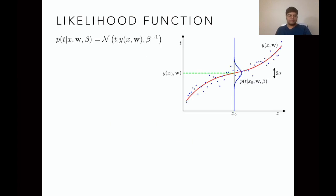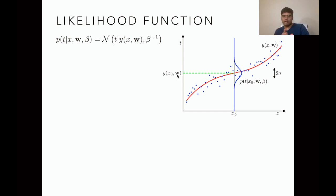Let's illustrate this through a figure. For an input x0, your model gives output y and the actual target is t. The difference between t and y has a Gaussian distribution centered around y(x0, w), which is your polynomial curve's output. So you assume that the model relating input and output is polynomial. This Gaussian has mean y(x0, w) and variance 1/beta. Now you need to estimate the parameters w and the precision parameter beta.